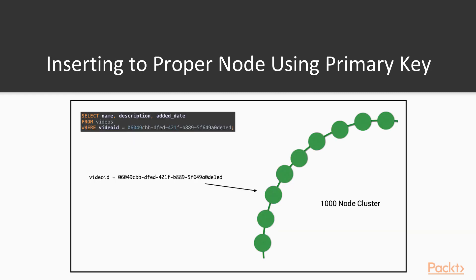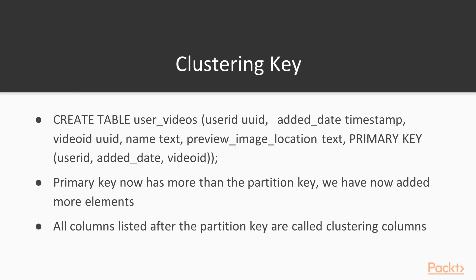Here is an example of a select query. We inserted our data into a 1000-node Cassandra cluster and we want to select using the partition key video_id equal to a specific UID. Because of the partition hashing algorithm, after applying that function we can be sure that the data for that specific partition resides on a specific Cassandra node.